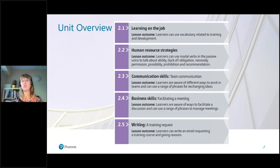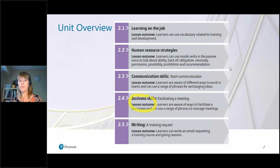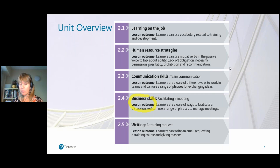Let's take a closer look at one of the units. This is taken from a B2 level of Business Partner — a typical unit with five lessons. Each lesson will have a lesson outcome. The first lesson has a video; the second lesson usually has a reading or listening and works on grammar; the third lesson is the communication skills lesson with more video; then we have business skills; and then a short writing lesson, which is only one page.